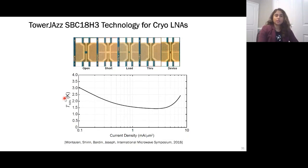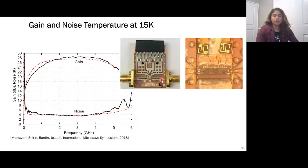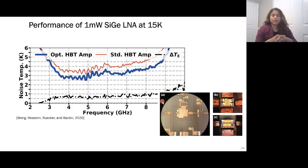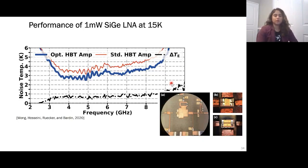We also looked at TowerJazz technology, which also has good transistors. We designed LNAs in that process, achieving better than 27 dB gain and less than 4 K noise temperature for a 2–4 GHz LNA. Additionally, a 2020 IMS work — a collaboration between IHP and UMass Amherst — optimized the germanium content in the base of these transistors for even better noise performance. You can see how noise performance improved significantly, showing there is still a lot of room for improvement by working directly with foundries to optimize the germanium profile.